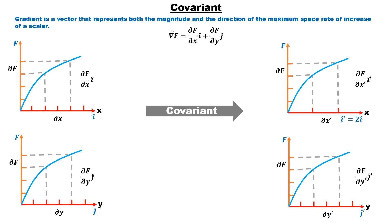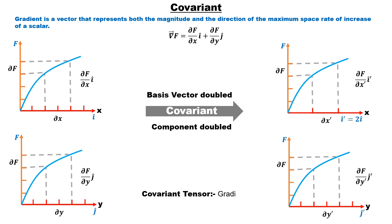This type of transformation is called covariant transformation. If a tensor is transformed from one coordinate to another such that its basis increases as well as its component, then that tensor is called a covariant tensor. Covariant means to transform in the same manner. If the component of a vector is doubled by doubling its basis, then such a vector is called a covariant vector — like gradient.